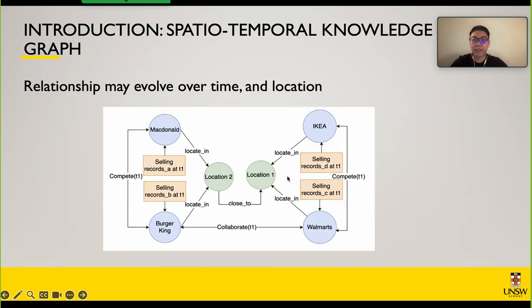Relationships between entities may change over time and locations, making a dynamic KG a spatial-temporal one. Here is an example of a spatial-temporal knowledge graph in which entities' attributes are represented with their location information and time.